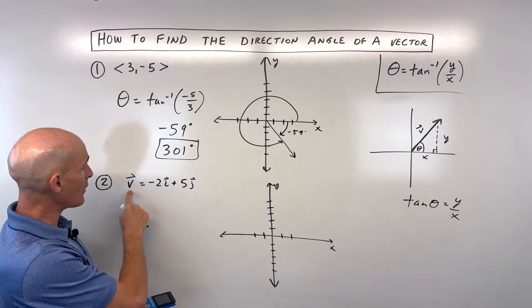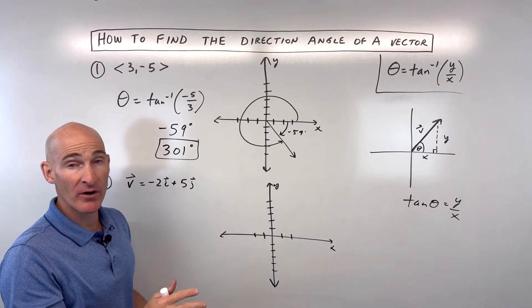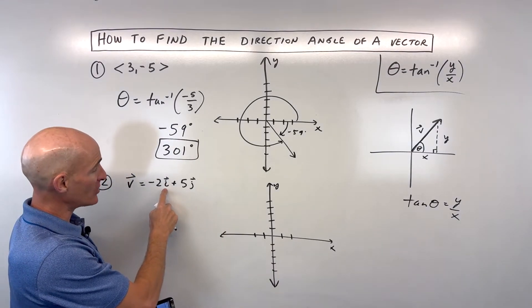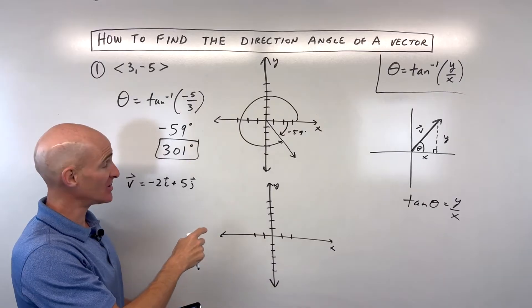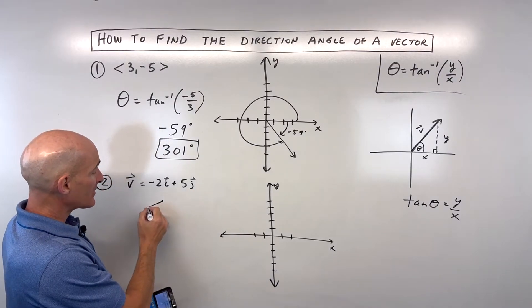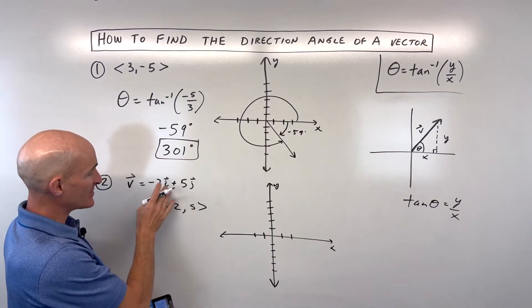This one, our vector is in the linear combination form of the standard unit normal vectors, i and j. i is a one-unit vector in the x-direction, and j is a one-unit vector in the y-direction. But I like to just rewrite this in the component form, <-2, 5>. It's the exact same thing, just a different way of writing it.